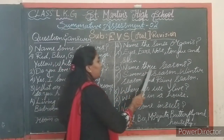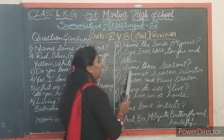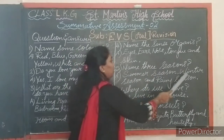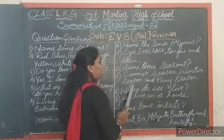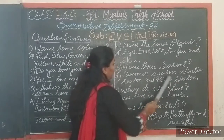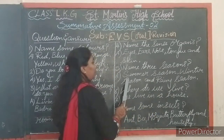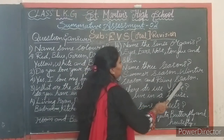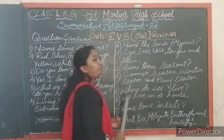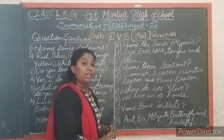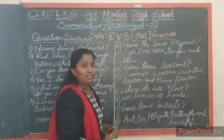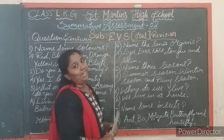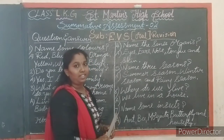Fifth question: name three seasons. Answer — summer season, winter season and rainy season. Summer season, winter season and rainy season. Now tell me children, name the three seasons. Yes — summer season, winter season and rainy season.